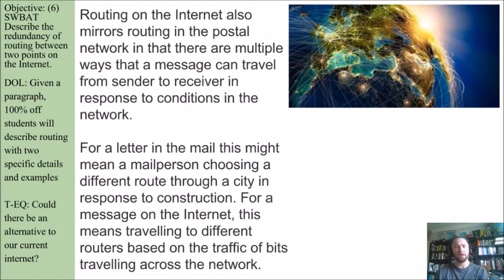Routing on the internet also mirrors routing in the postal network in that there are multiple ways a message can travel from sender to receiver in response to conditions in the network. For a letter in the mail, this might mean a mail person chooses a different route through a city in response to construction. For a message on the internet, this means traveling to different routers based on the traffic of bits across the network.